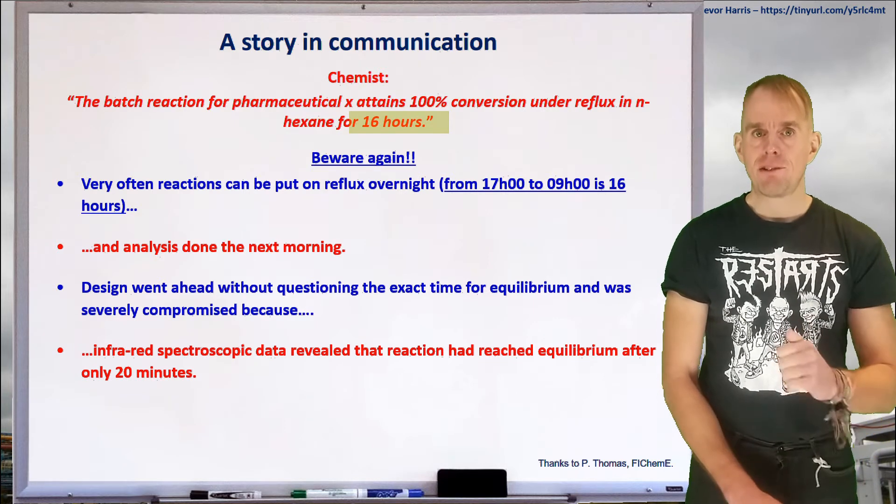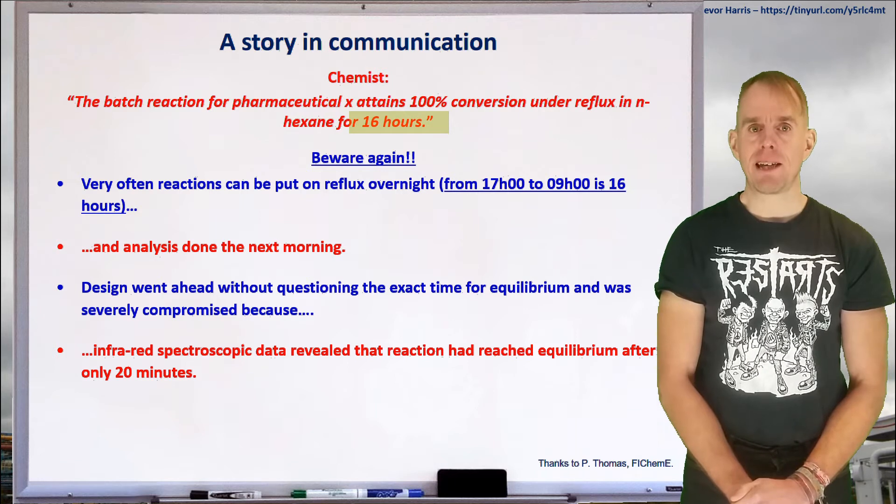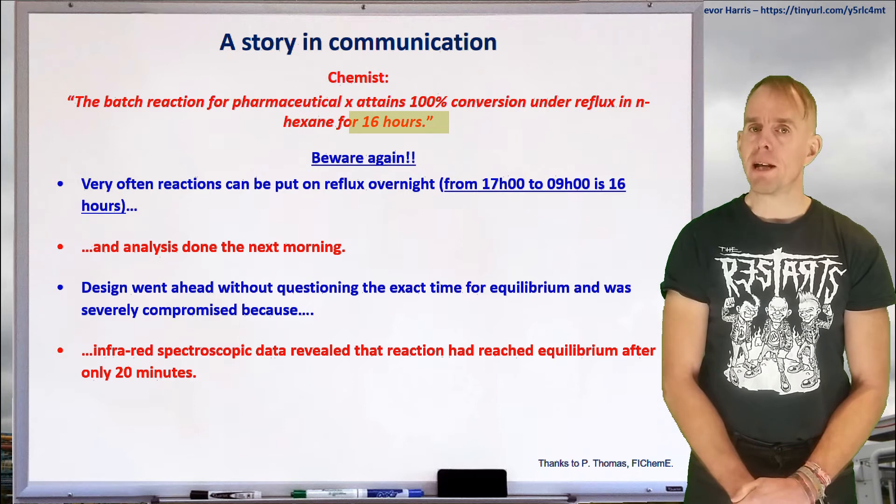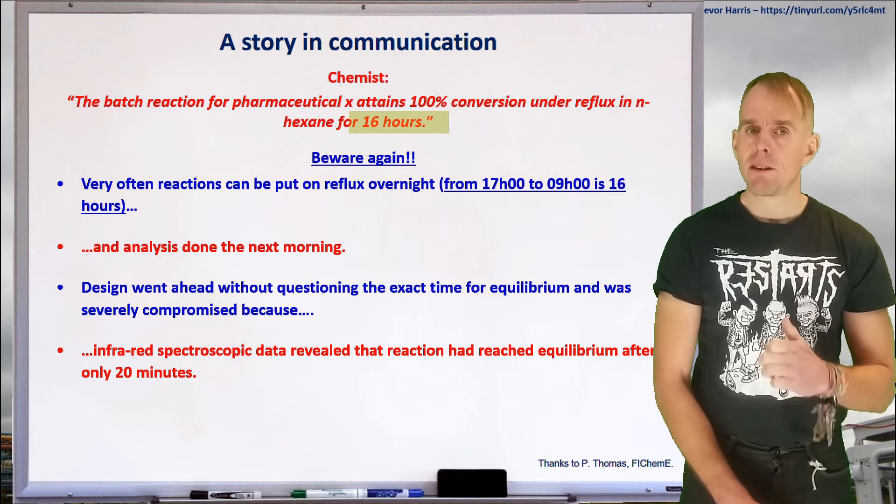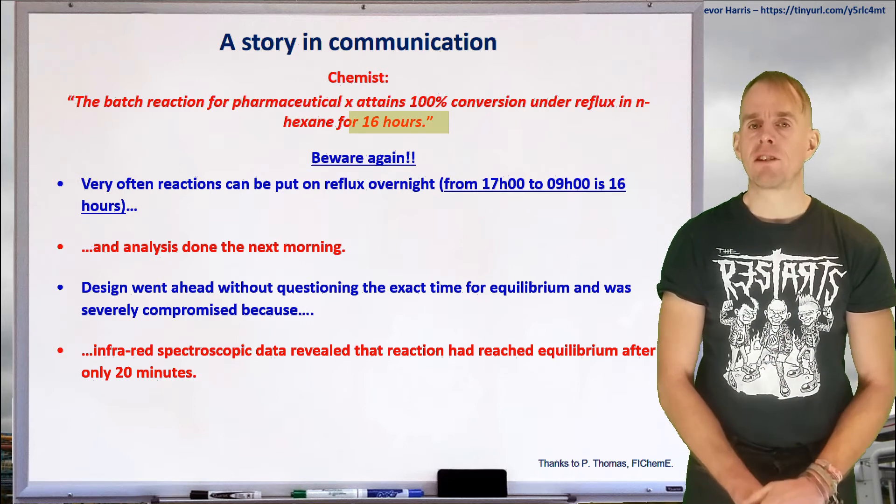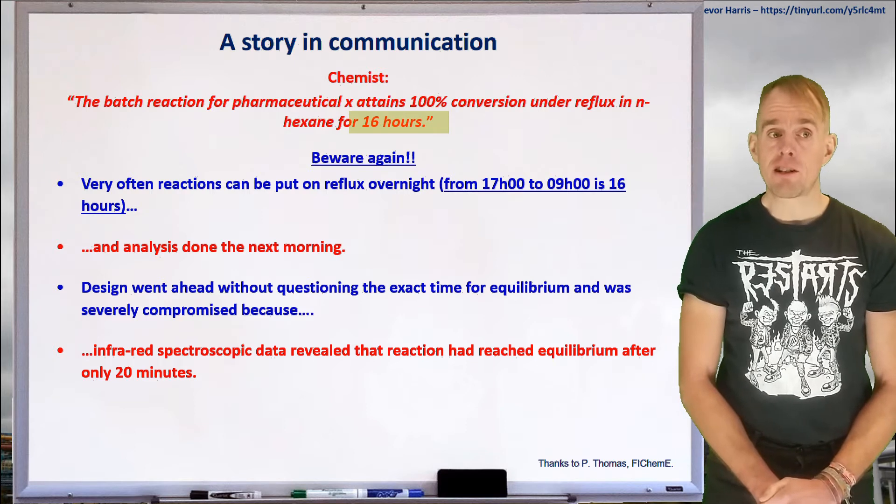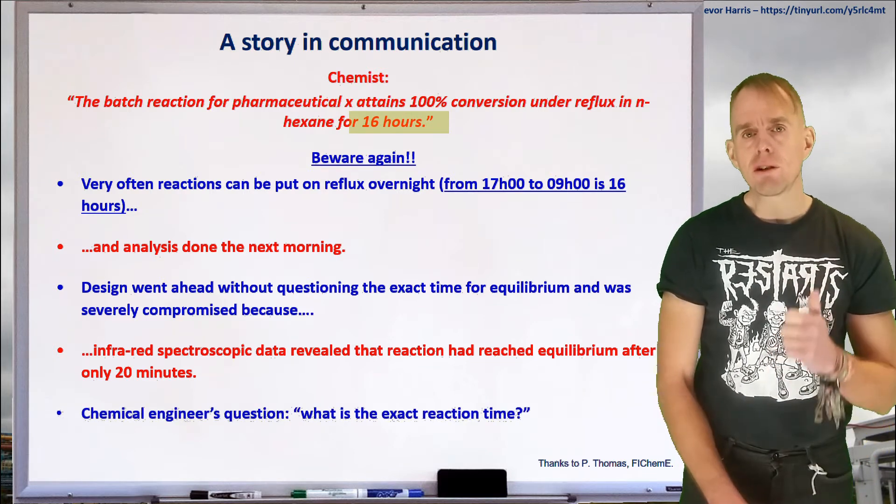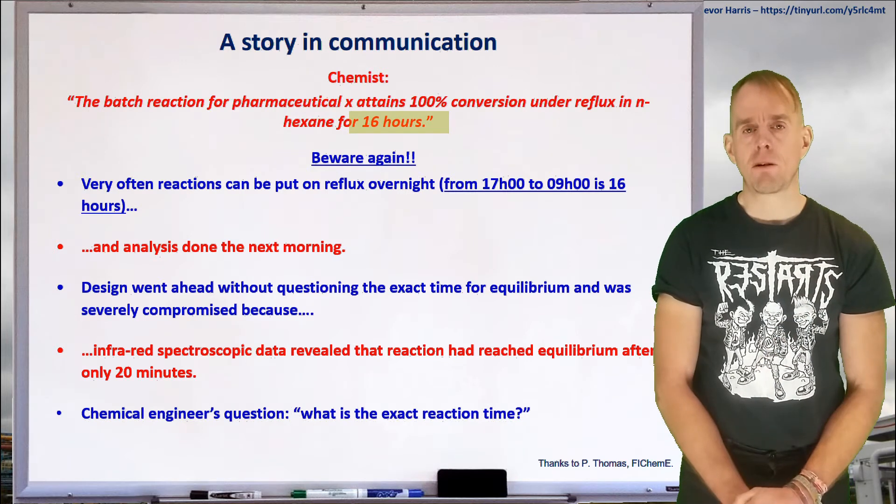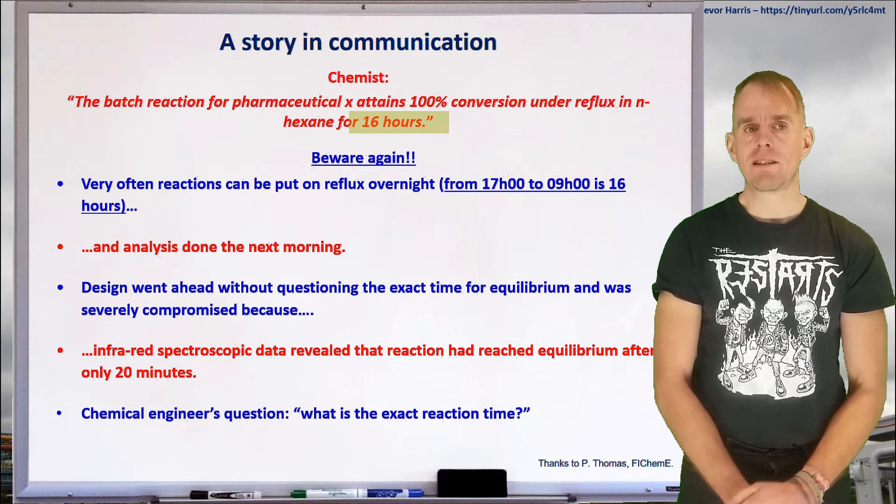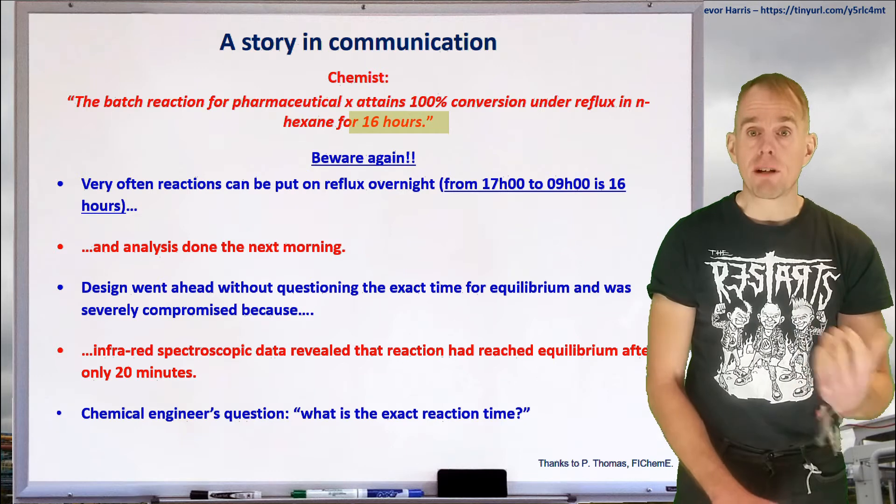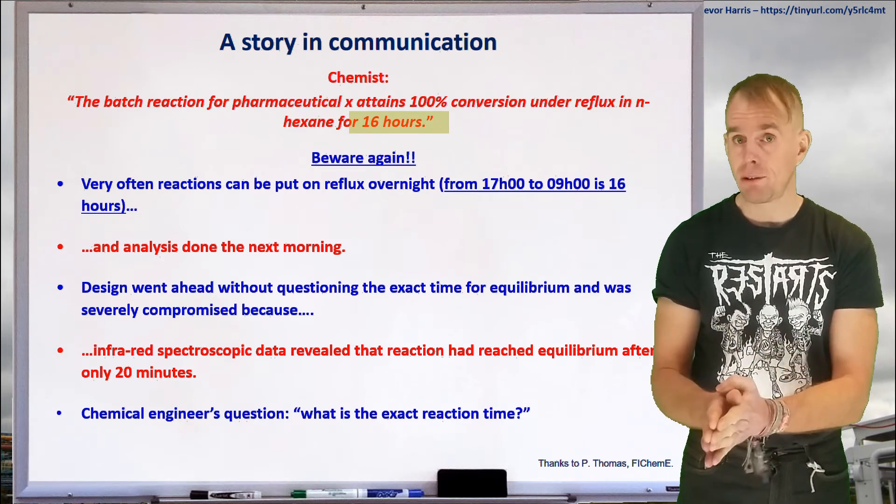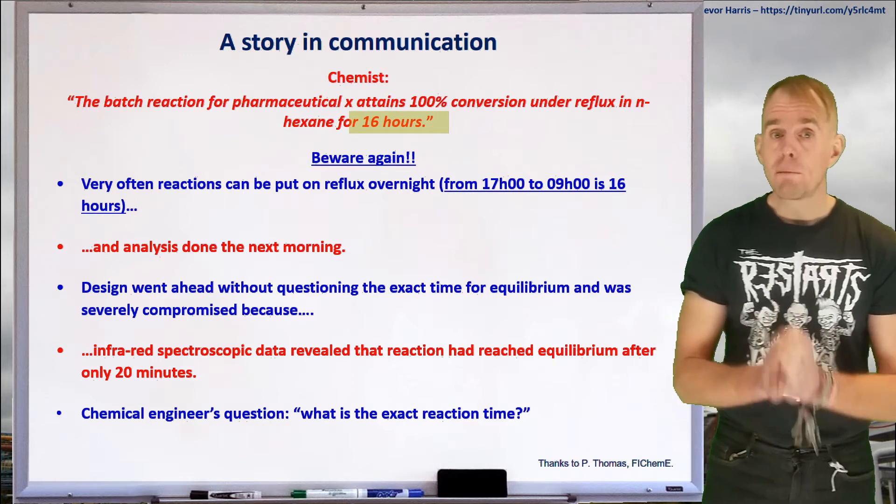So, if you see 16 hours anywhere in a dialogue between a chemist and an engineer, you've got to think, oh, hang on a minute. Does that mean that a reaction was put on overnight and analysed the next morning? So, again, the chemical engineer's question should be, well, do you know the exact reaction time? Have you got any data, spectroscopic data or otherwise, to actually tell us how the reaction varies as a function of time? Not just that after 16 hours it was complete. So, beware.